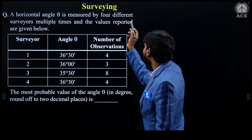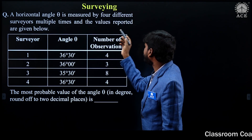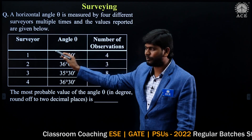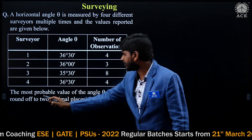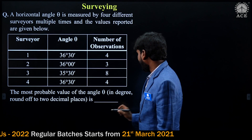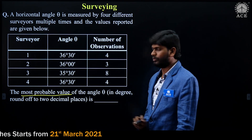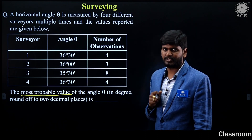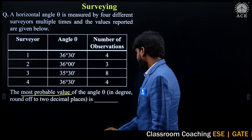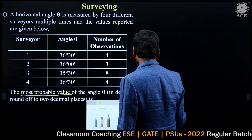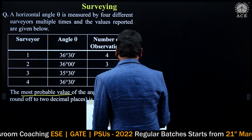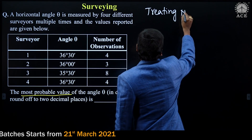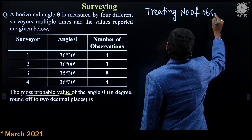Here is the next question. A horizontal angle theta is measured by four different surveyors multiple times and the values reported are given below. The angle theta and number of observations by each surveyor are given. He is asking us to calculate the most probable value of angle theta. This question is from the concept of errors and adjustments. We need to treat the number of observations as weights.